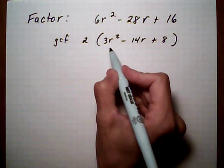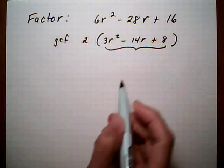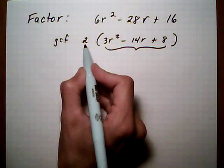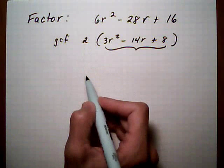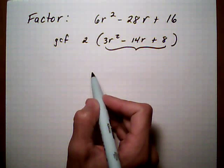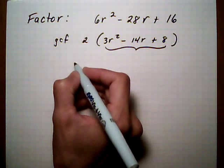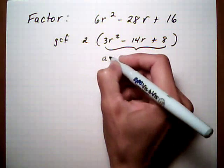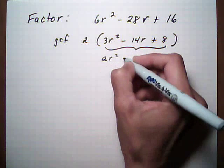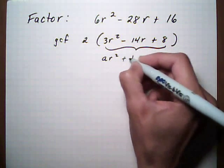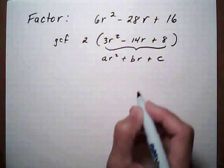Now we're going to go ahead and factor this trinomial. When we're done we'll just tack on the 2 onto the outside and multiply it to the answer. So we're going to do a factor by grouping method. To do that, think about this as the general form of ar squared plus br plus c.